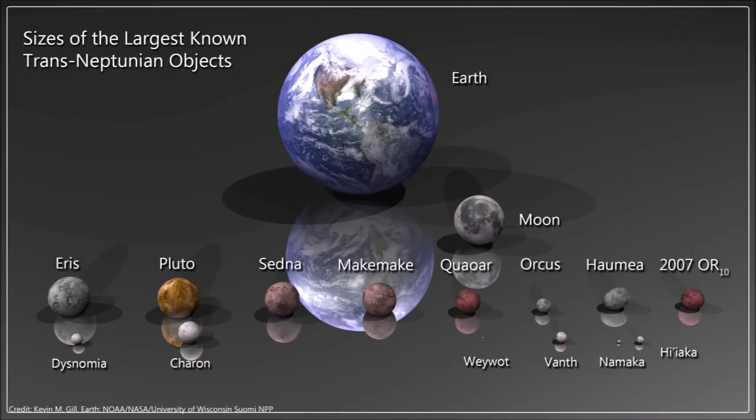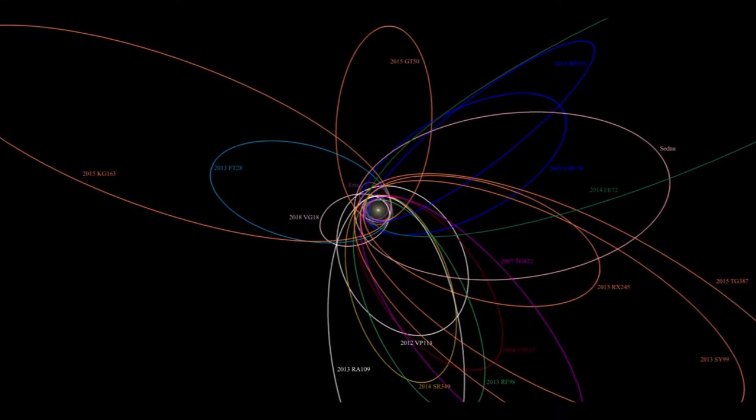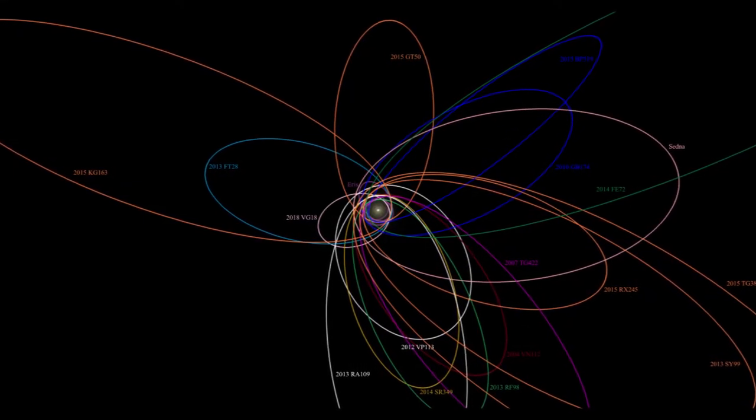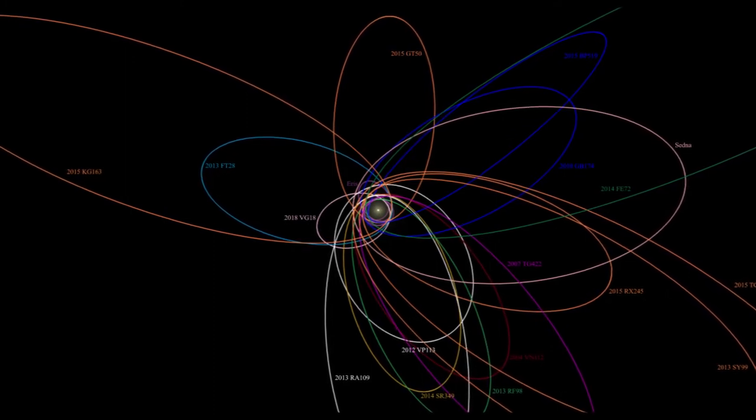There are hundreds of these objects in the outer solar system, and it's likely that we haven't even discovered all of them yet. These icy worlds take ages to orbit the Sun, and they usually have strange, long orbits.